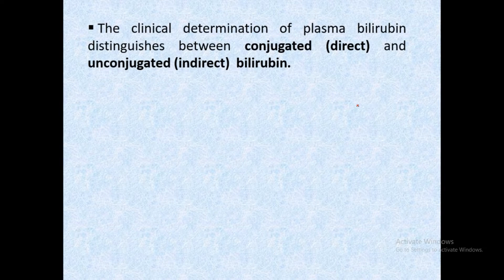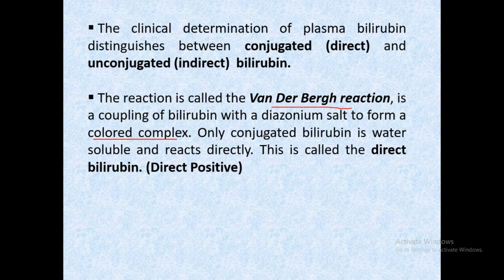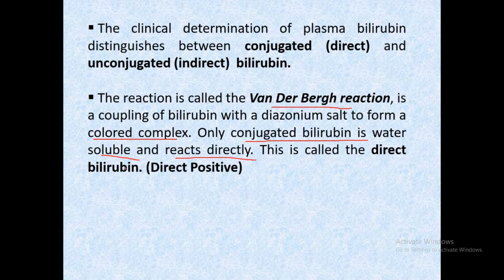Clinically, plasma bilirubin is distinguished between conjugated (direct) and unconjugated (indirect) bilirubin. This is done using the Van den Berg reaction, which involves coupling bilirubin with a diazonium salt to form a colored complex. Only conjugated bilirubin is water-soluble and reacts directly — this is called direct bilirubin or a direct positive Van den Berg test.